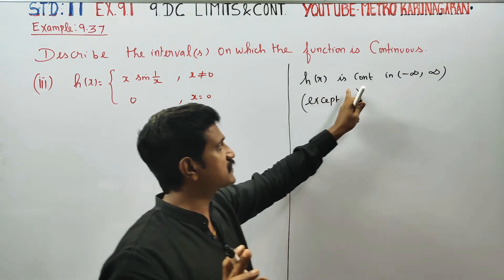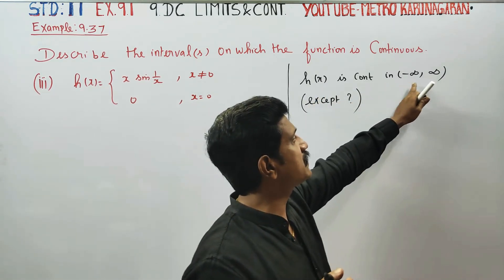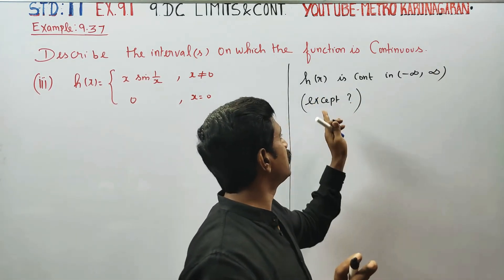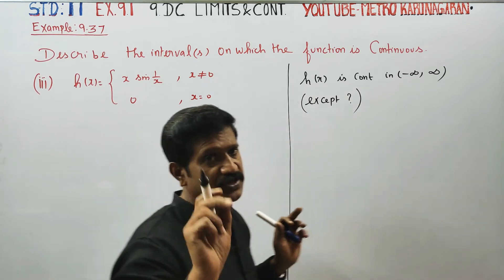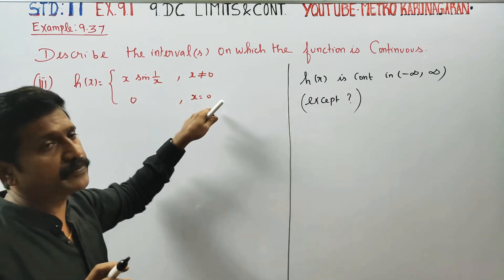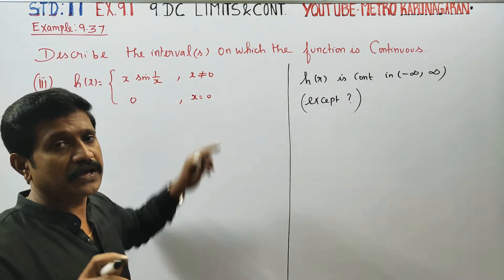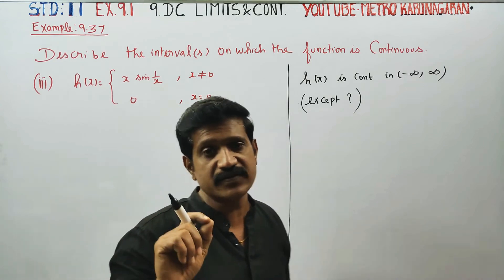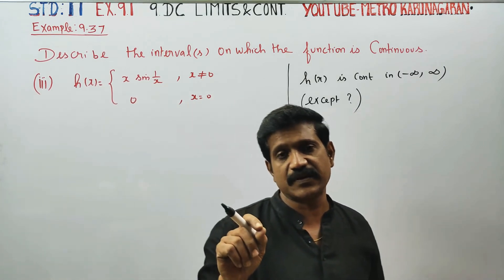That is, h(x) is continuous on (minus infinity, plus infinity), except at one point — you know, 1/0 is a problem. That is, zero is confirmed as problematic, and h(x) is continuous on the real numbers.